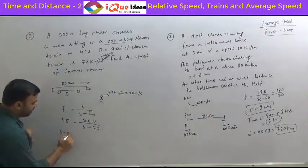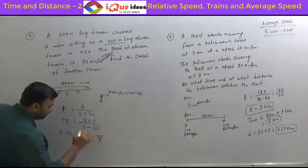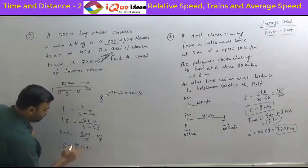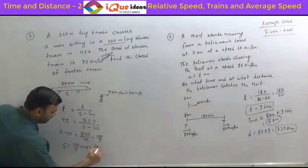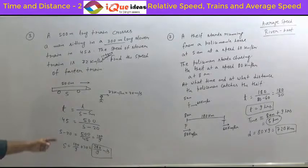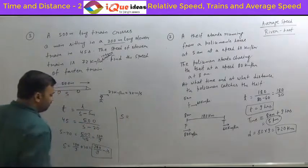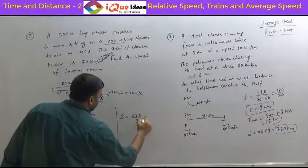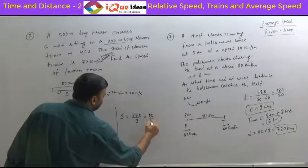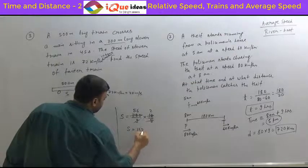So we get S minus 20 equals 500 divided by 45, which becomes 100 by 9. Therefore S equals 100/9 plus 20, which is 100/9 plus 180/9, giving 280 by 9 meters per second. To convert to kilometers per hour, multiply by 18/5: the 9s cancel and we get 280 divided by 5 times 2, which is 112 kilometers per hour. So the speed of the fast train is 112 km/h.